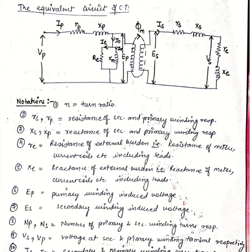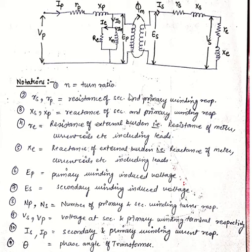Good morning students. In today's lecture we will see the phasor diagram of CT. In the previous lecture we discussed the equivalent circuit of CT and its notations. This is basically the mathematical analysis of CT. We are doing this analysis to find out the errors in CT. As we already discussed, CT and instrument transformers have two types of errors: phase error and ratio error.